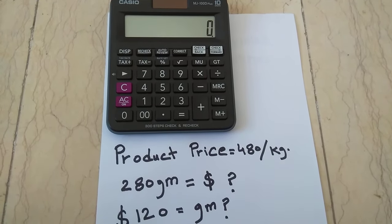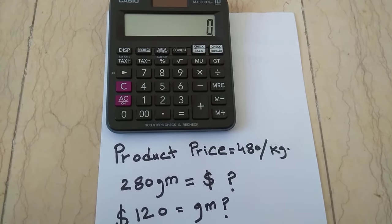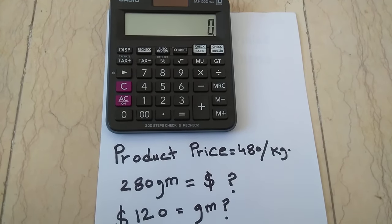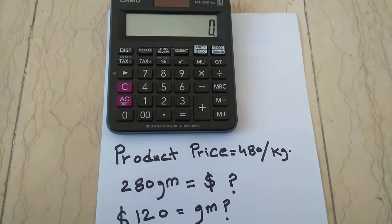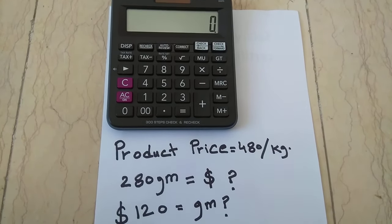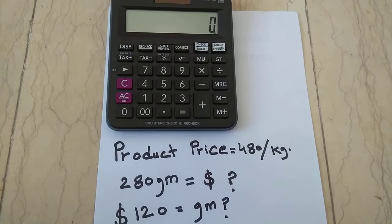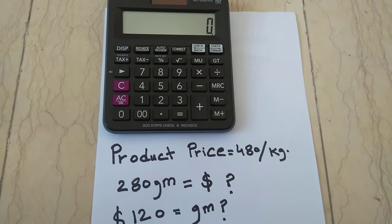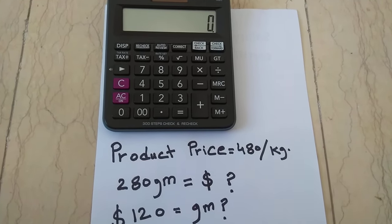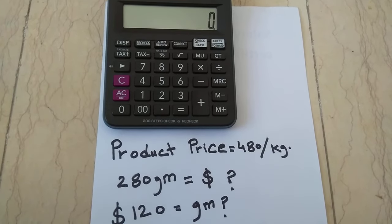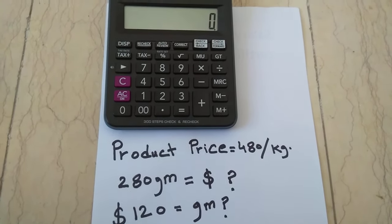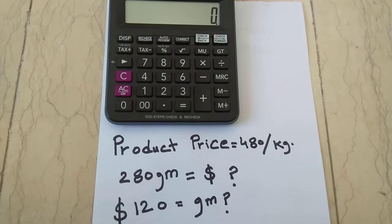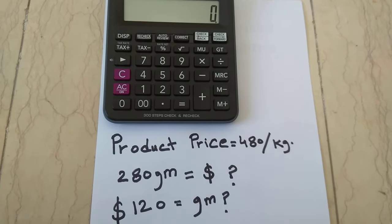Hello guys, I hope you are doing really well. Today I am going to show you two basic calculations that you use in your daily life, which are very important. The first is: if you know the price of a product per kg, how much do you have to spend to get a certain number of grams? The second is: if you have a certain amount to spend, how many grams will you get?